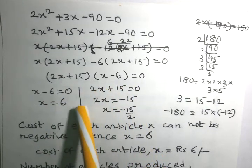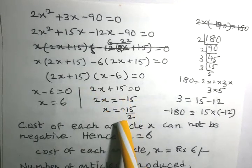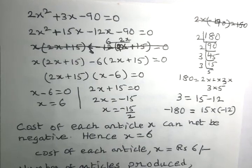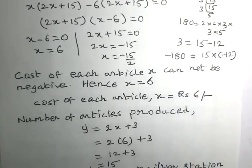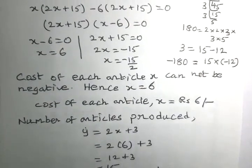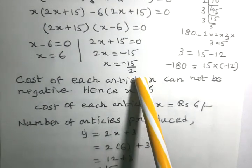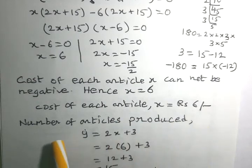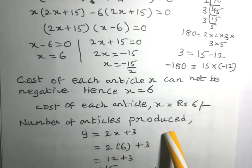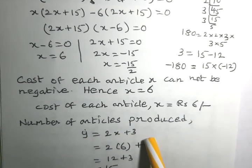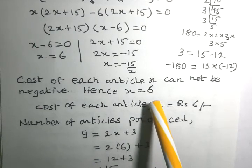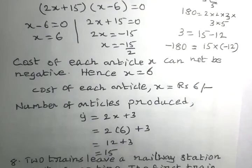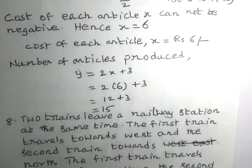Hence we write 2x plus 15 multiplied by x minus 6 equals 0. Considering x minus 6 equals 0, we get x equals 6. Considering 2x plus 15 equals 0 gives x equals minus 15 over 2, but the cost of each article cannot be negative, so we take only x equals 6. Therefore the cost of each article is 6 rupees, and the number of articles is y equals 2 times 6 plus 3 equals 15.